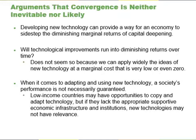If an economy's growth depends only on the deepening of human capital and physical capital, then we could expect that economy's growth rate to slow down over the long run because of diminishing marginal returns. However, there's another crucial factor in the aggregate production function, which is technology. Developing new technology can provide a way for an economy to sidestep the diminishing marginal returns of capital deepening. With the combination of technology and capital deepening, the rise in GDP per capita in high-income countries does not need to fade away because of diminishing returns. The gain from technology can offset the diminishing returns involved with capital deepening.